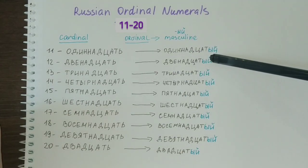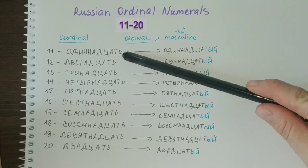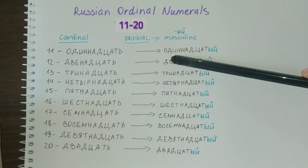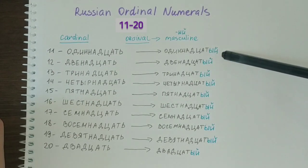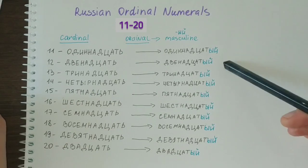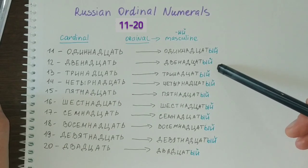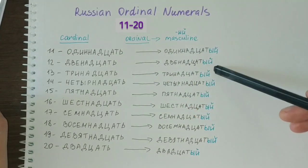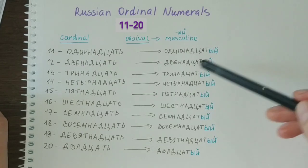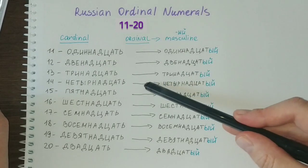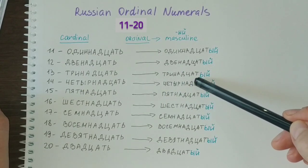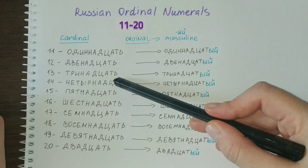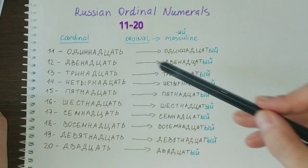Одиннадцатый — 11th. From the cardinal одиннадцать (11) we get the ordinal одиннадцатый (11th). Next we have двенадцатый, meaning 12th. Next, 13th is тринадцатый, from тринадцать (13).